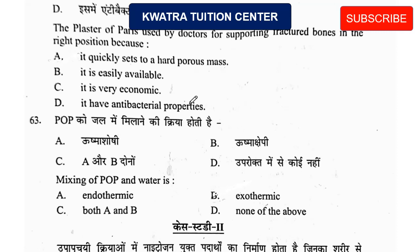Question 62: Plaster of Paris is used by doctors for supporting fractured bones in the right position because it quickly sets to a hard porous mass. As you know, when someone has a fracture, the cast is hard — it supports the bones. So that is the correct reason.